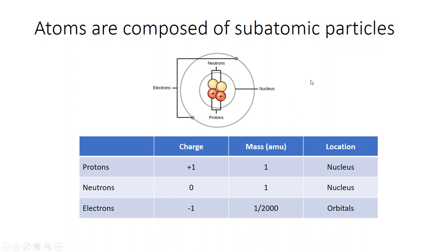Electrons are what give an atom its reactivity — how reactive it's going to be — because it is the sharing, or the gain and loss, of electrons that allows bonds to form, which we'll talk about in a minute.